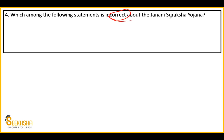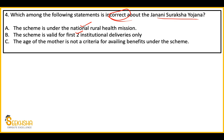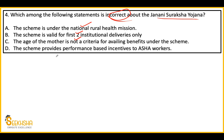Fourth question: Which of the following statements is incorrect about the Janani Suraksha Yojana? Women-related schemes are quite important. Option A: The scheme is under the National Rural Health Mission. Option B: The scheme is valid for first two institutional deliveries only. Option C: The age of the mother is not a criterion for availing benefits under the scheme - meaning it doesn't matter what age the pregnant woman is. Option D: The scheme provides performance-based incentives to ASHA workers. Identify the incorrect statement. The answer is Option B.